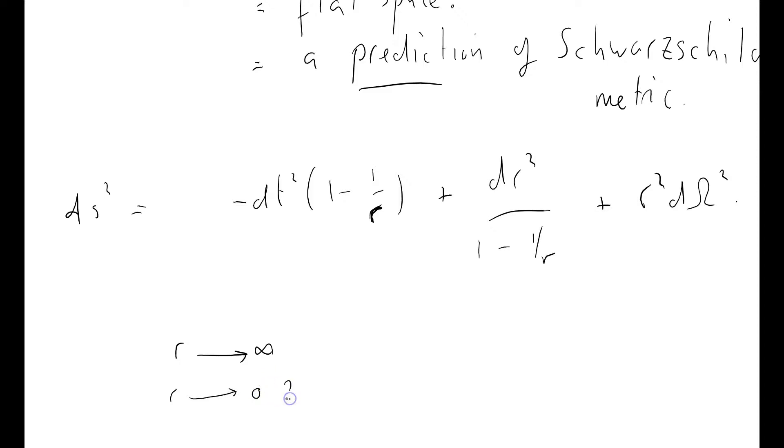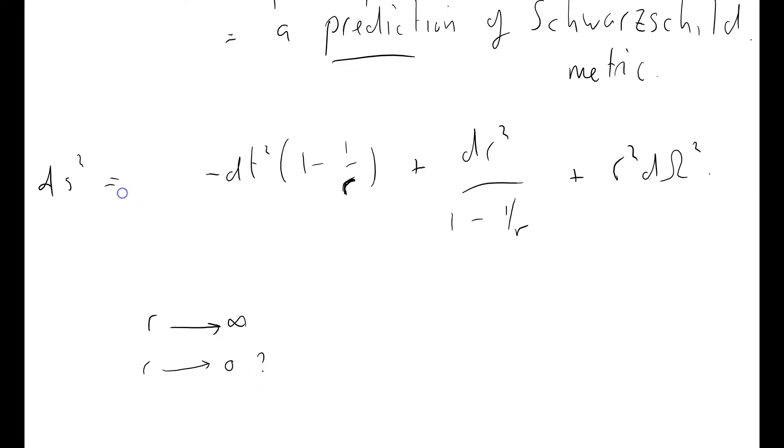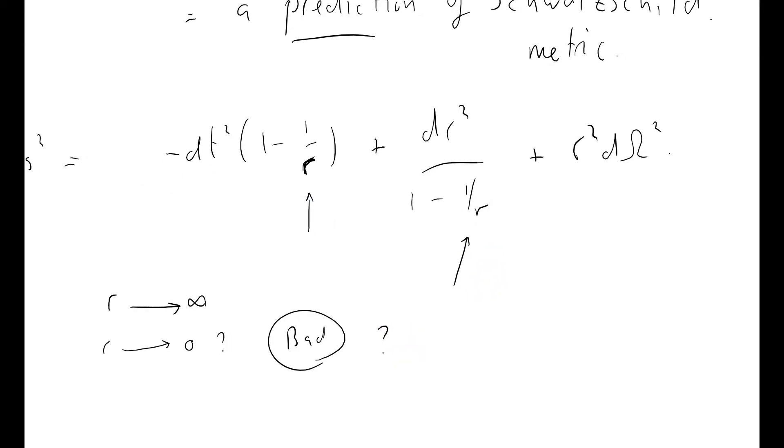What happens when r approaches zero? Well, this is bad. This is very, very bad, because we've got infinities cropping up here and here. But that's not so, well, it is bad, but it's not unexpected.